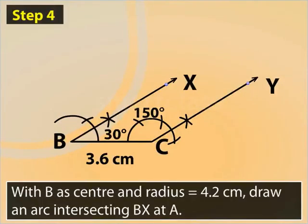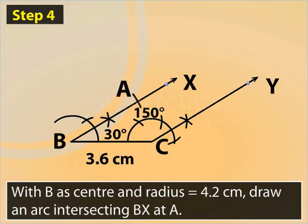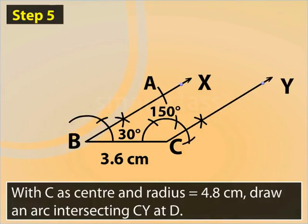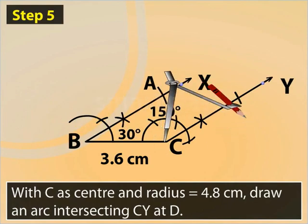With B as center and radius equal to 4.2 cm, draw an arc intersecting BX at A. With C as center and radius equal to 4.8 cm, draw an arc intersecting CY at D.